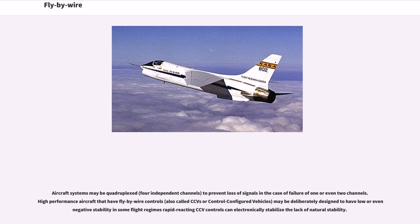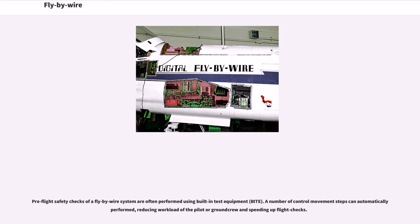High performance aircraft that have fly-by-wire controls, also called CCVs or control configured vehicles, may be deliberately designed to have low or even negative stability in some flight regimes. Rapid reacting CCV controls can electronically stabilize the lack of natural stability. Pre-flight safety checks of a fly-by-wire system are often performed using built-in test equipment (BITE), where a number of control movement steps can be automatically performed, reducing workload of the pilot or ground crew and speeding up flight checks.